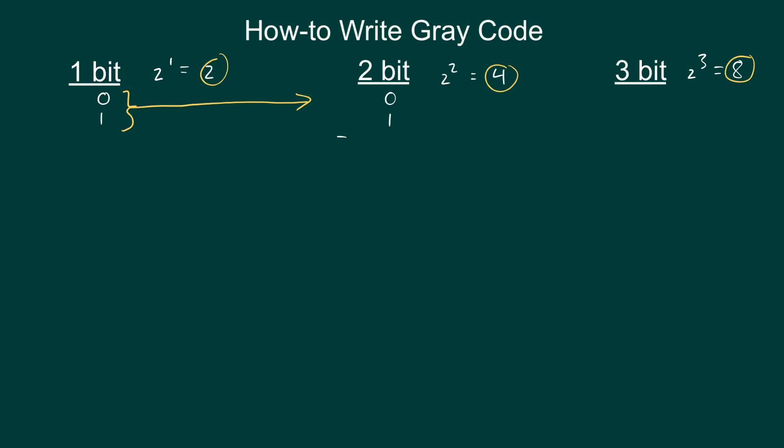So to do that I'm going to draw this line and I'm going to mirror everything above the line. So 0 and 1 mirrored is 1 and 0.